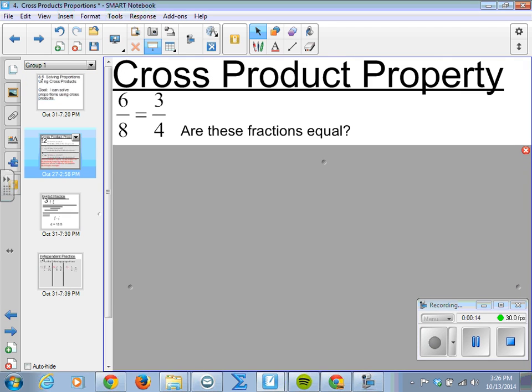We'll start by looking at why cross-products work. So 6 8ths and 3 4ths, are those fractions equivalent? Well, we know they are, because we divide 6 by 2, we get 3, 8 by 2, we get 4. So these two fractions are equal.